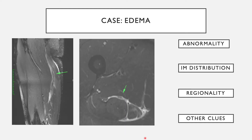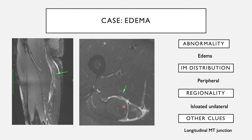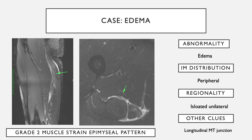Contrasting with another case, there is similar linear edema, but as opposed to the previous case where the edema was along the myotendinous junction, here the edema is along the myofascial junction. It is peripheral in distribution and isolated and unilateral. This is a grade two muscle strain of the epimyseal pattern, where the injury is along the muscle-fascial junction as opposed to along the muscle-tendon junction.